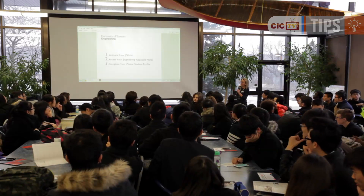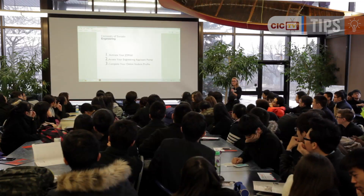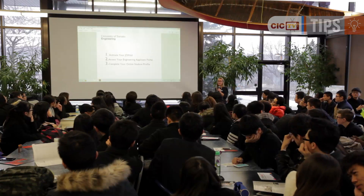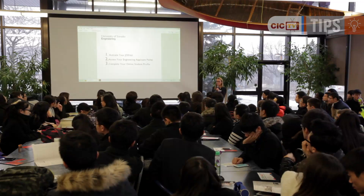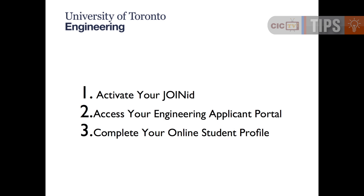After you apply on the OUAC website, you're going to be waiting to get an acknowledgement letter from our admissions department. Our admissions department will be emailing you to activate your join ID. After this point, you're going to access your engineering applicant portal, and there will be a few tasks that you have to complete on the online student profile.